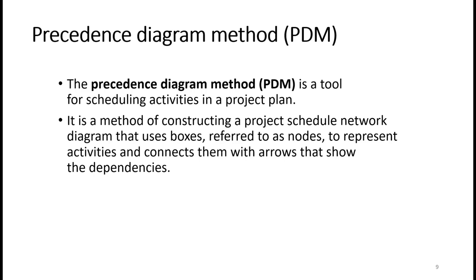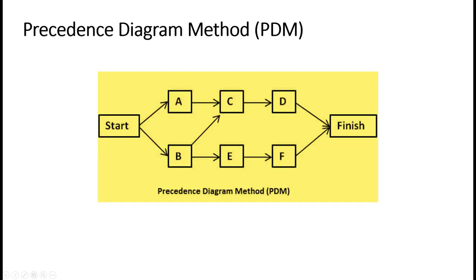The Precedence Diagram Method is a tool for scheduling activities in a project plan. It is a method of constructing a project schedule network diagram that uses boxes, referred to as nodes, to represent activities and connects them with arrows that show the dependencies. Tasks are represented by nodes and dependencies shown as arrows or links between the nodes.